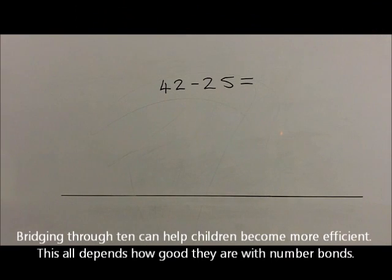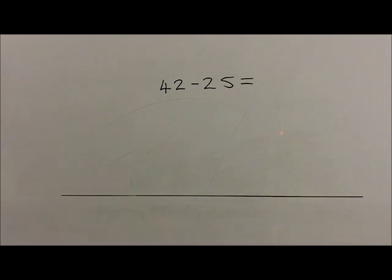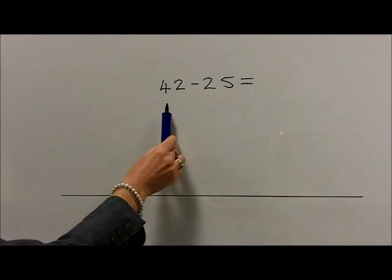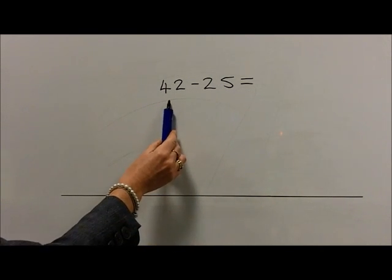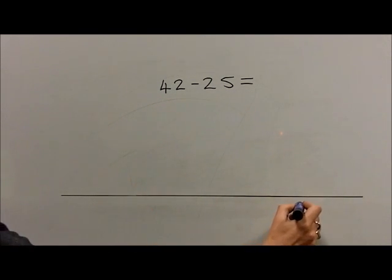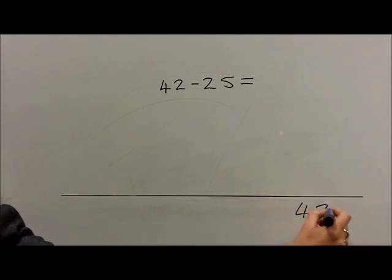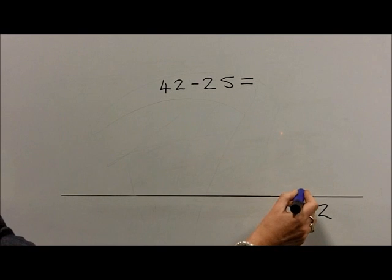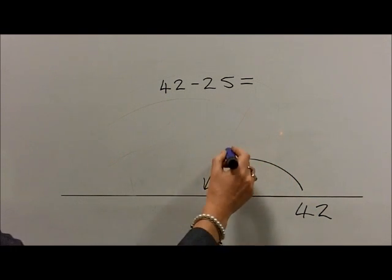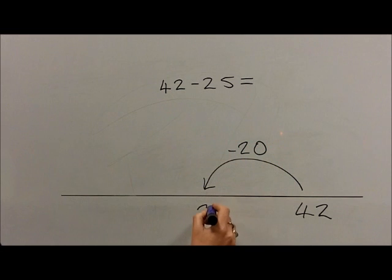Bridging through 10 can help children become more efficient. This all depends on how good they are with number bonds. So for example, with the question 42 take 25, they would start at the number 42 on the right-hand side of the number line. Then initially subtract 20 in one jump, counting back to the number 22.